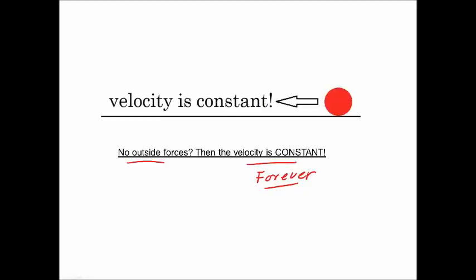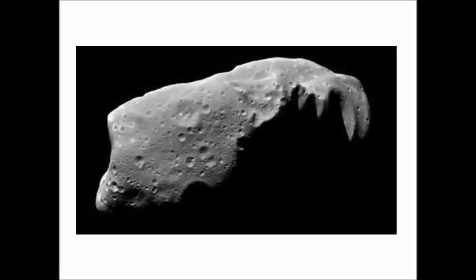That sort of sounds like magic. I mean, where would you ever find a place where there's no friction, no forces at all acting on an object? Well, it just so happens there is a place — outer space. Asteroids, meteorites, rocks that move through outer space can actually continue moving forever at a constant velocity. That means not speeding up, not slowing down, not changing directions. As long as they are far enough away from any other celestial body — stars, planets — that would apply a gravitational force to them, these objects can move at a constant velocity forever, just like Isaac Newton said.